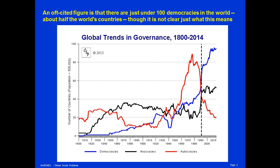Autocracies are easy enough to understand — those are countries where there's one-person rule, dictatorships of one kind or another. But what are anocracies? It's an odd word. Etymologically it should mean no rule at all. The Polity4 project uses anocracy to mean something between a dictatorship and a democracy. In other words, those countries labeled with the black line in this graph have some aspects of democracy, but not all aspects of democracy.